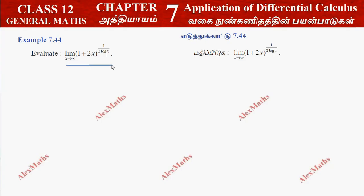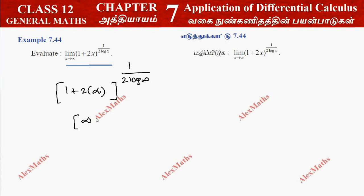First, we substitute x to infinity directly: (1 + 2x)^(1 / (2 log x)). The exponent becomes 1 over log infinity, which is infinity — so we get infinity over infinity, giving exponent 0. Infinity to the power 0 is an indeterminate form; anything finite to the power 0 is 1, but infinity to the power 0 is indeterminate.